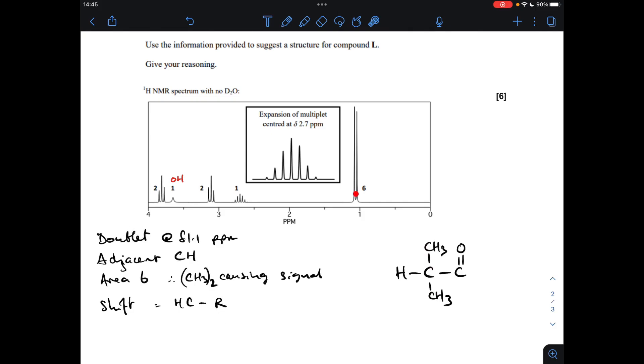The final signal is this one here. It's a doublet, that means there's an adjacent CH. It's got an area of six, so that means there's two equivalent methyl groups or six hydrogens equivalent to each other causing the signal, and the shift is H to C to R. The reason I've left this on the screen is because we're talking about these now.